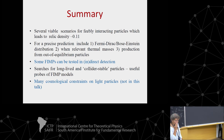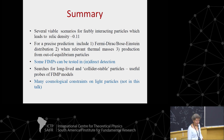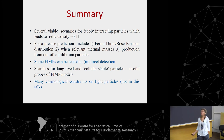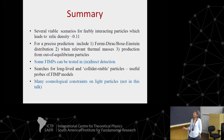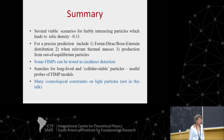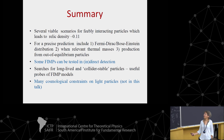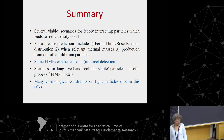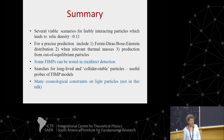In summary, there are definitely several viable scenarios for feebly interacting massive particles that lead to the correct relic density. For precise predictions, many effects must be included: the Fermi-Dirac or Bose-Einstein distributions when relevant, thermal masses, and possible production from out-of-equilibrium particles. FIMPs can be tested in direct detection or at colliders. I have not discussed cosmological constraints on light particles, but these can also be very important constraints.